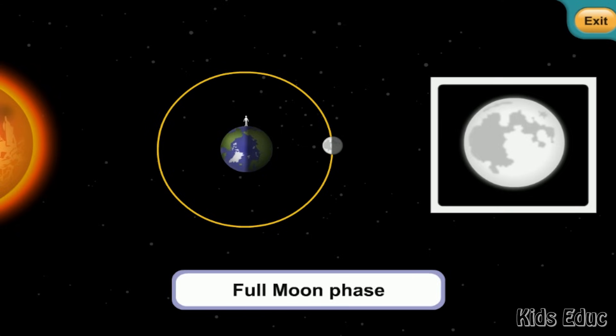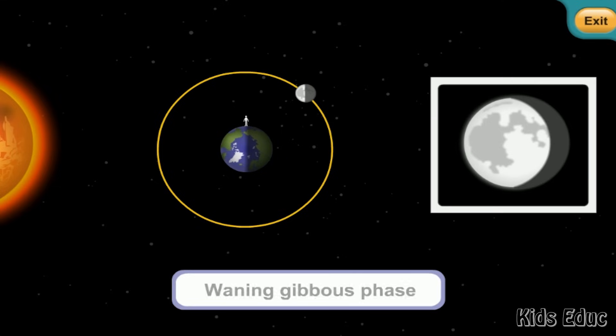During the full moon phase, the moon is on one side of the earth and the sun is on the other. The sun illuminates the half of the moon that faces the earth directly, and the moon looks like a full round circle. In the waning gibbous phase, the other half of the moon is lit by the sun, and we see it looking like a little less than a whole circle. The waning gibbous moon looks like it is shrinking, doesn't it?